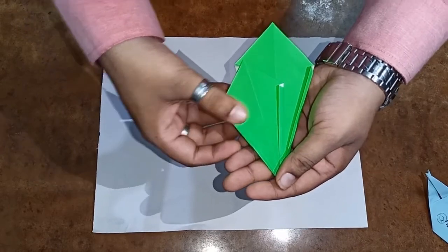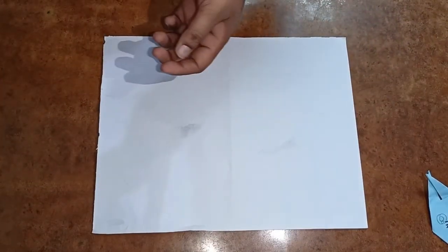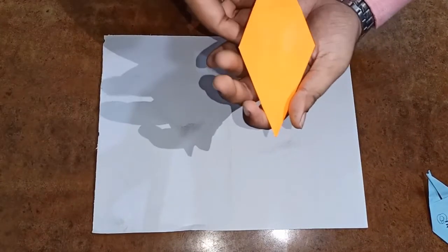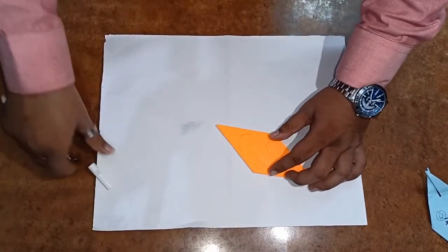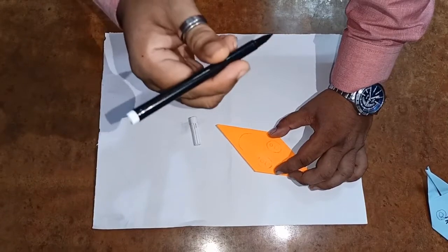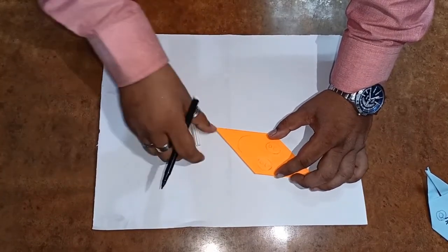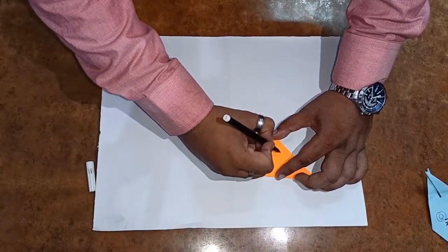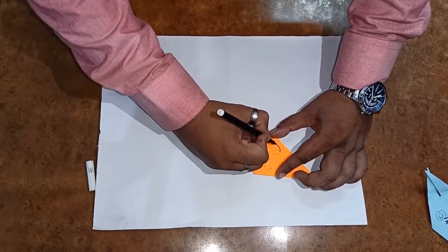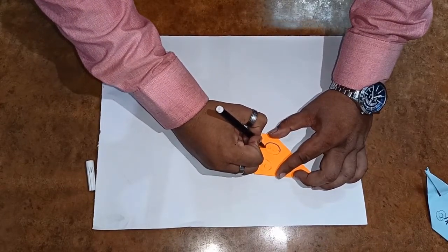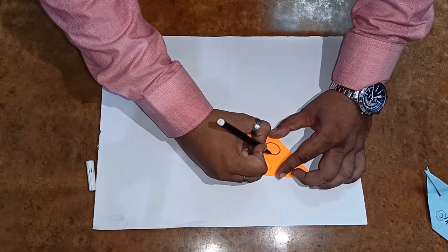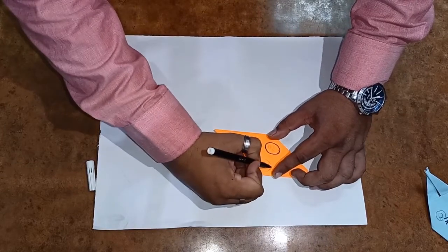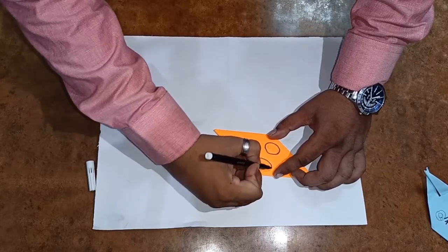After this, we are going to make the eyes of the carrot. Here. Can you see? Now, see here carefully. What you have to do? We are using sketch pen. Black sketch pen. See how I am making it? Be very careful when you draw. Like this.